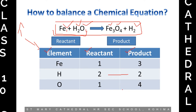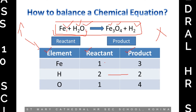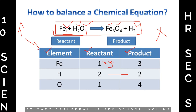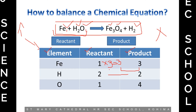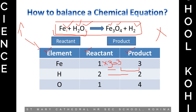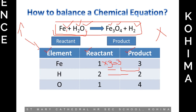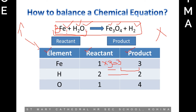To make the values equal, we use multiplication. For iron: one multiplied by three gives us three, which matches the product side. Now both sides have three for iron. Once you have written the multiplier in the table, don't forget to write it in the equation as well, because that is what your teacher wants to see. Three multiplied by one gives three — both sides are now equal for iron.